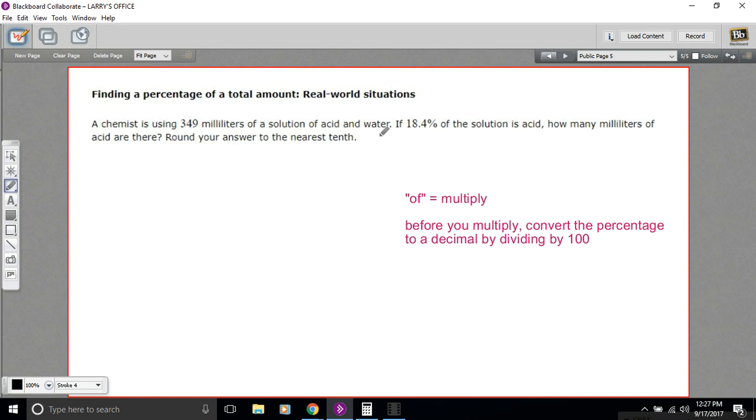Some of that solution is acid. Some of it's water. It's all mixed together. It says if 18.4% of the solution is acid, how many milliliters of acid are there? So we're being asked to define what is the actual portion of this 349 that's milliliters.